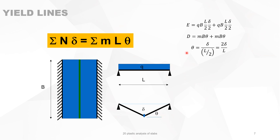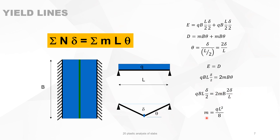For small angles expressed in radians, theta equals 2 delta over L. When E equals D, we substitute for theta and, fortunately, delta disappears from the equation — so we don't have to calculate deflections. We can find M from this equation, which gives QL squared over 8, a well-known formula from mechanics. This shows that the method of yield lines using virtual work easily recovers known formulas.